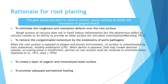The second rationale is to remove contaminated cementum by the endotoxins of periodontal pathogens. When the root surface is exposed to plaque and the pocket environment, its surfaces will be contaminated by toxic substances — notably endotoxins. When dentin is exposed, these may invade the dentinal tubules, and scaling alone will be insufficient to remove them, so the portion of root surface must be removed. The third rationale is to create a layer of organic and mineralized tooth surface by removing all cytotoxic changes. The fourth rationale is that removal of root surface changes promotes new attachment and adequate periodontal healing.